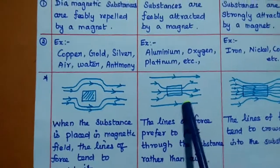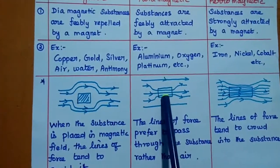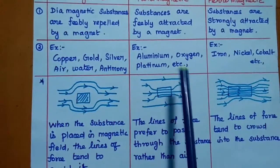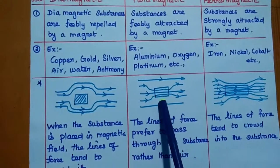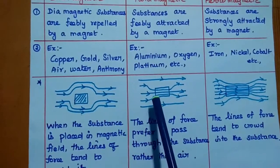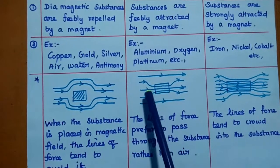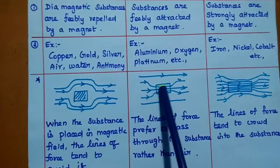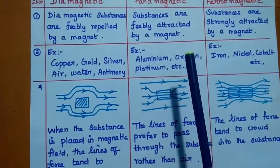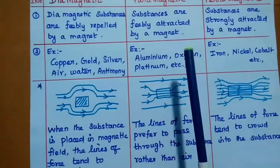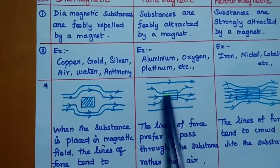For paramagnetic materials like aluminium or platinum placed in an external magnetic field, the lines of force prefer to pass through the substance rather than through the air. A few lines are attracted towards the material and pass through it. That is what paramagnetic means — feebly attracted.